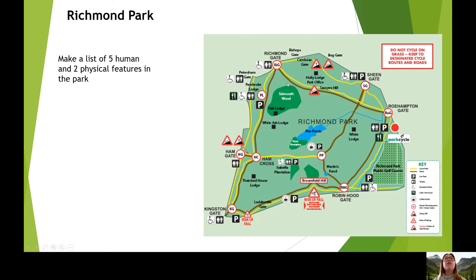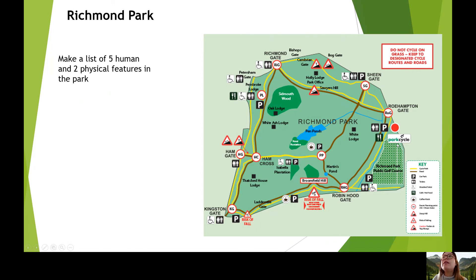We can also see lots of public toilet facilities — there's usually one at each gate. We can see P's which stand for car park. We can also see cafes — there's a little cafe sign there and another one here. And we can also see a fork and knife symbol, which means restaurant. Can you spot the other restaurant on the map? We can also see Park Cycle — this is a bicycle hire facility, so you can hire bikes and cycle around the park.